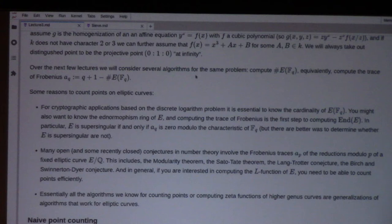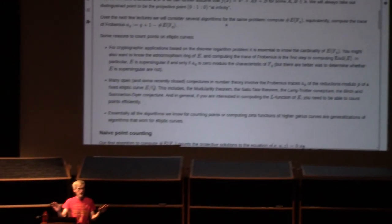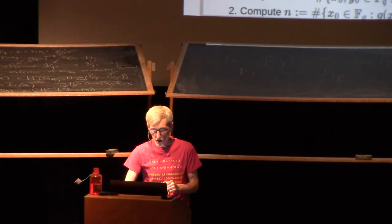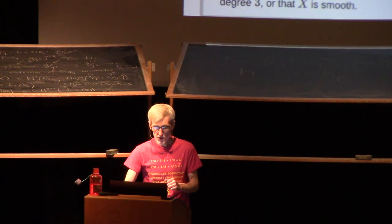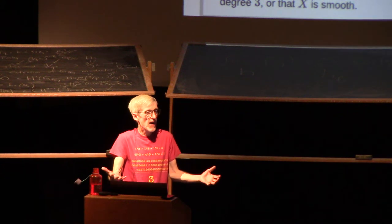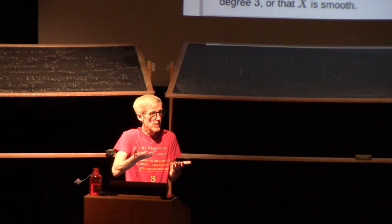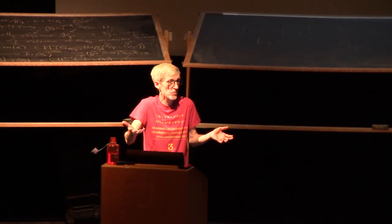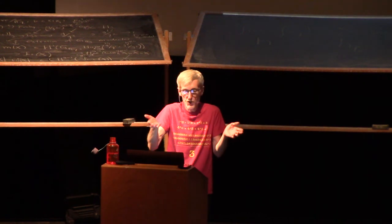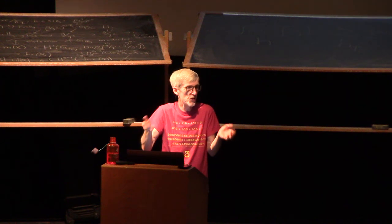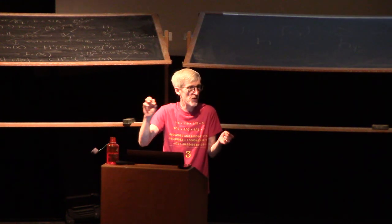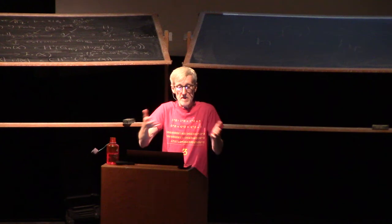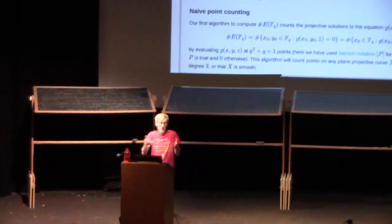Our first algorithm to count points is going to be the absolute most naive algorithm you could imagine. We have a plain projective cubic, a smooth projective cubic curve in P2, and we just want to count the number of projected points on the curve. We're just going to count projective solutions to our equation g of x, y, z equals zero. I'm using the letter g because I want to save the letter f for my y squared equals f of x.